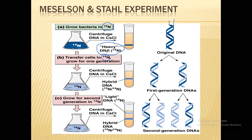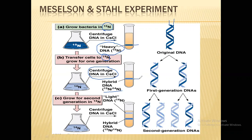They grew the second generation in N14 medium instead of N15. So when the new DNA is synthesized, they will not remain N15. When they grew this specific N15-grown bacteria for one generation in N14 medium, after centrifugation by the help of CsCl, they found that a hybrid DNA — N15-N14 — was formed. This band resided a little above the previous N15-N15 band, meaning the band is slightly lighter because one strand is N15 in dark blue and the second strand is N14.